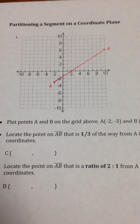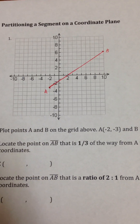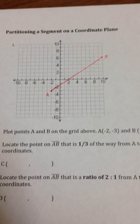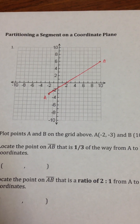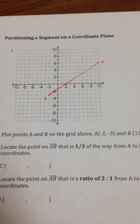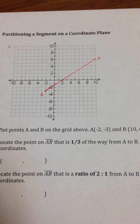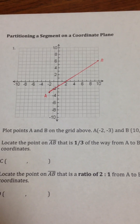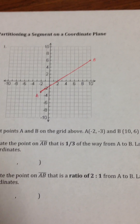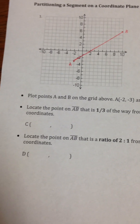Partitioning a segment means you're going to find a point on this segment that is a certain fraction away from the other point. Usually the fraction is something like thirds, fourths, or fifths — not as simple as a half. We did this before without a grid, so now we're going to learn how to do it on a grid. The best way to do it is to use slope.